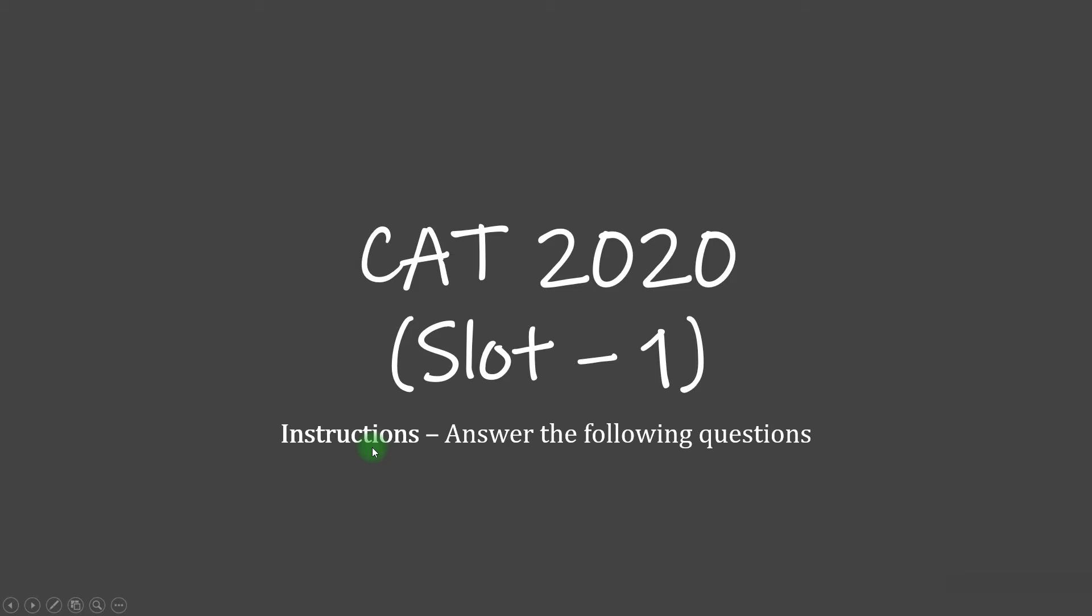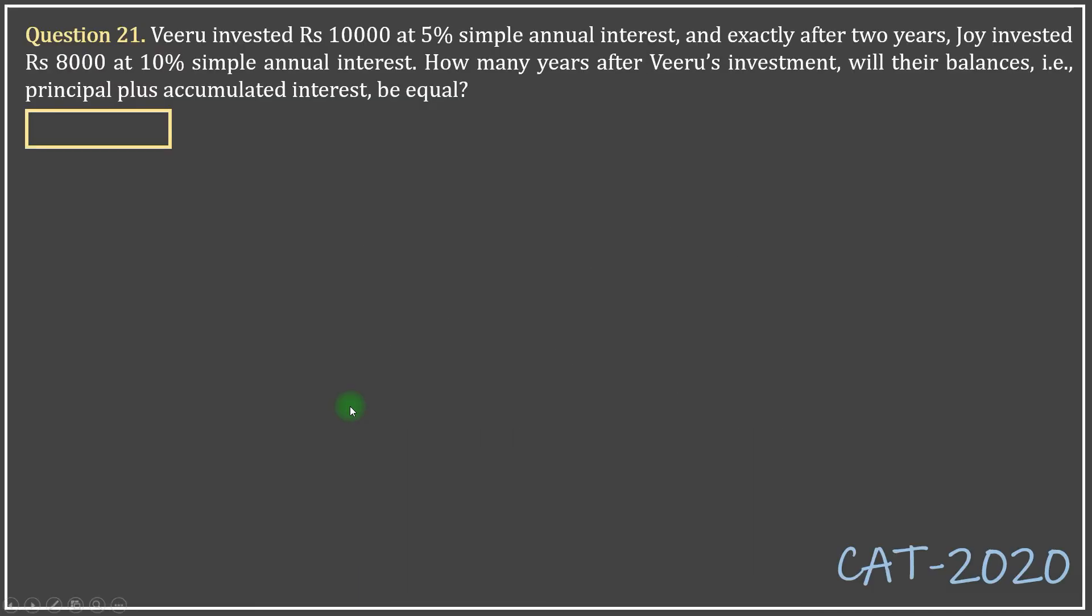So let's get on with the question from CAT 2020 Slot 1. Veeru invested Rs 10,000 at 5% simple annual interest, and exactly after two years, Joy invested Rs 8,000 at 10% simple annual interest. How many years after Veeru's investment will their balances, principal plus accumulated interest, be equal?